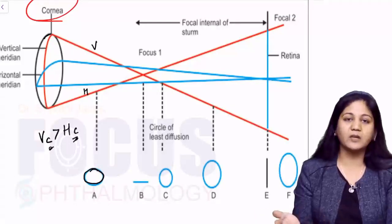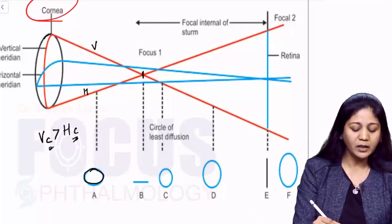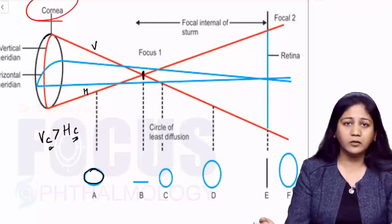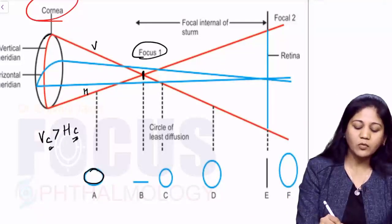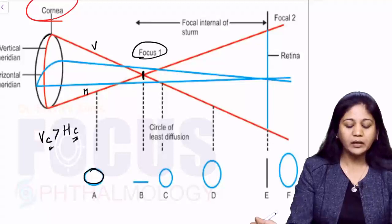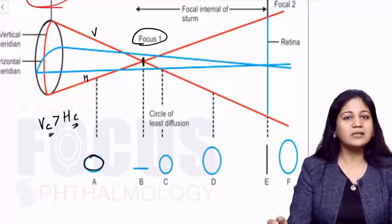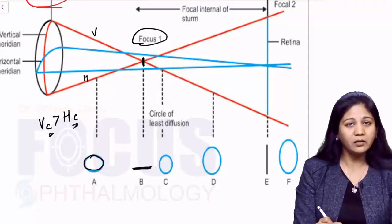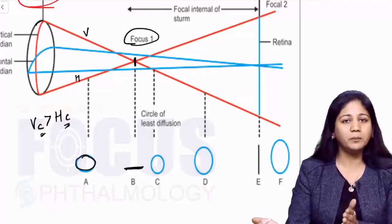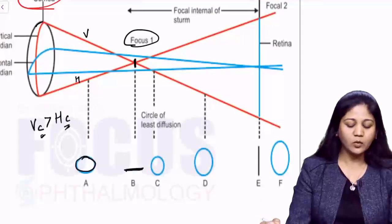At point B, the vertical rays have come to a point of focus — this is Focus Number One. Now that the vertical rays have reached focus, only the horizontal rays are still converging. The resulting image at point B will be a horizontal line, because the horizontal rays are still in the process of converging.